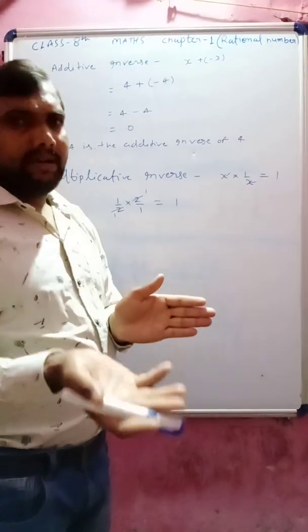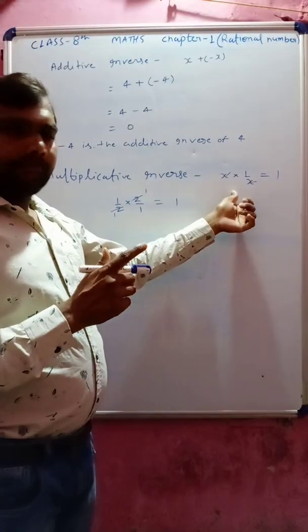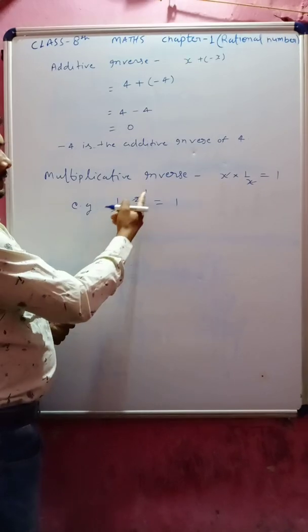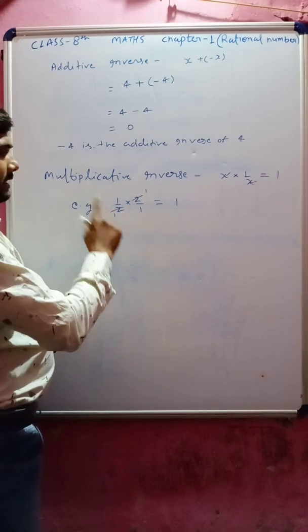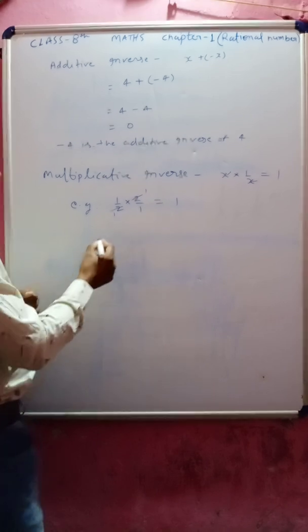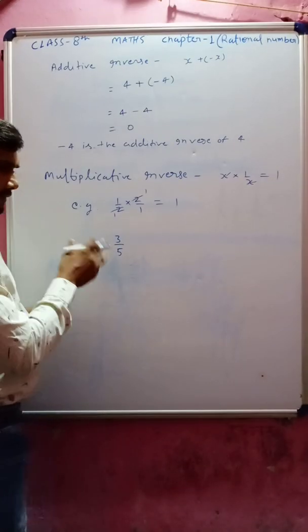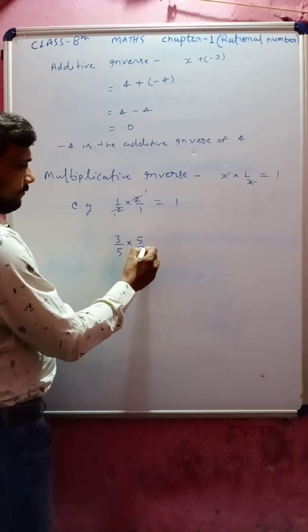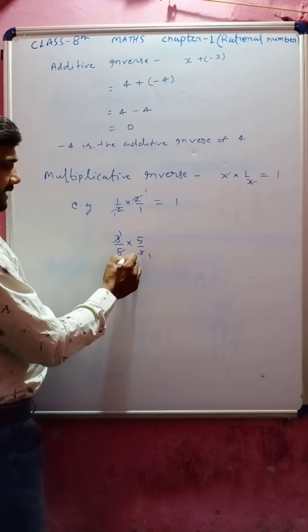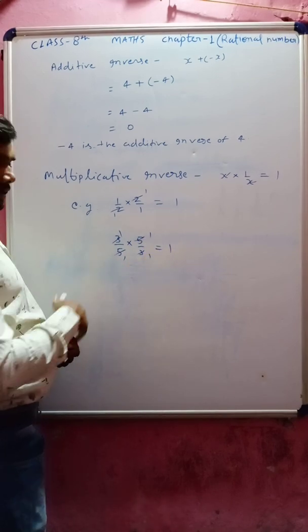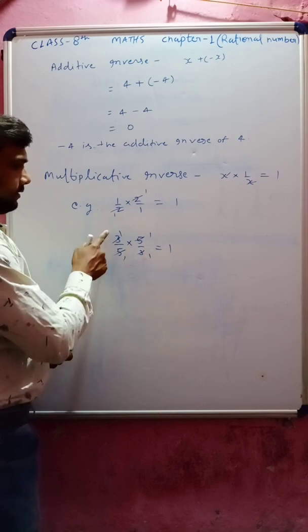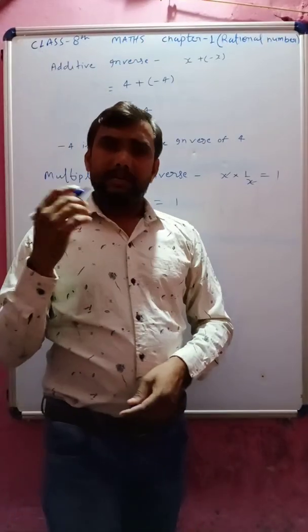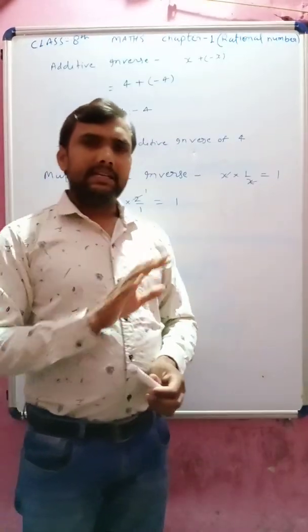The number and its multiplicative inverse, when multiplied, should give 1. For example: 1 by 2 into 2 by 1 equals 1, so 2 is the multiplicative inverse of 1 by 2. One more example: 3 by 5 — its multiplicative inverse is 5 by 3, because 3 by 5 multiplied by 5 by 3 gives 1. In this way we can find the multiplicative inverse and additive inverse of numbers. It's very easy. Thank you.